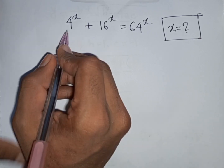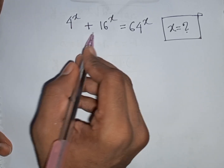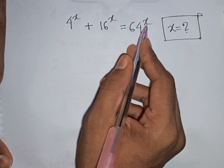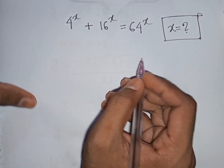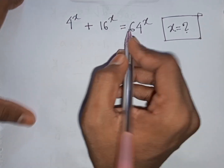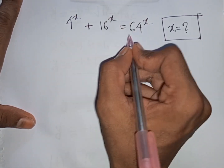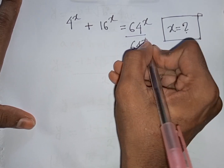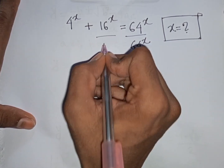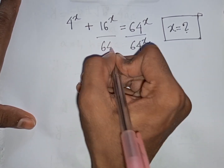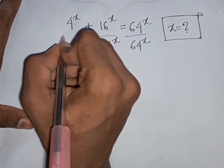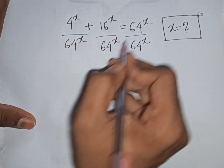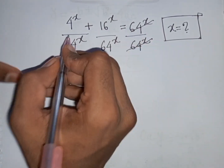How to solve 4^x + 16^x = 64^x. Find the value of x. First, we divide both sides by 64^x. So divided by 64^x on both sides — this will be cancelled.